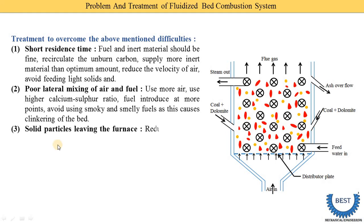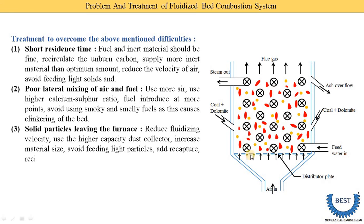The third problem is solid particles leaving the furnace — coal and dolomite in solid state leave the furnace before combustion is carried out. To avoid this, we need to reduce the fluidizing velocity, meaning we reduce the velocity of the fluidizing air. Also, use a higher-capacity dust collector. Increase material size — if the material size is larger, its weight is also higher, so the particles do not leave with the flue gases.